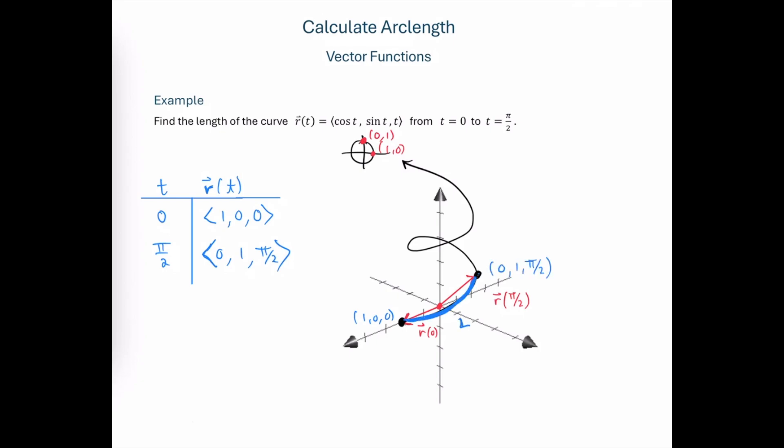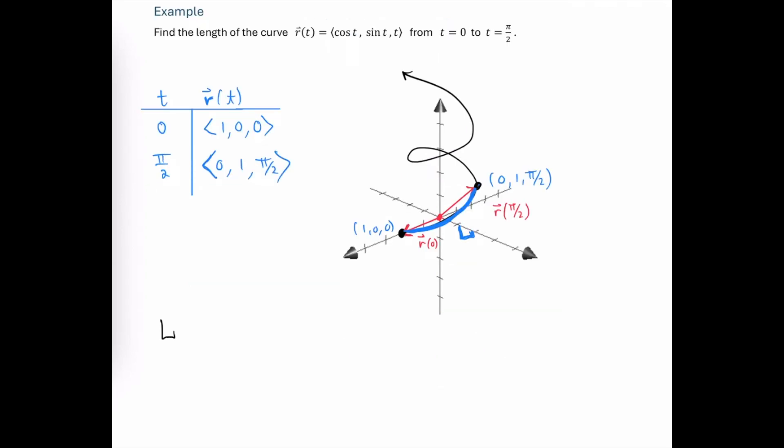And this is the length of the curve that we're after. We'll call it L. As a reminder, our arc length formula is the integral from α to β of the magnitude of the derivative vector function integrated with respect to the parameter. So let's determine what the derivative vector function is.